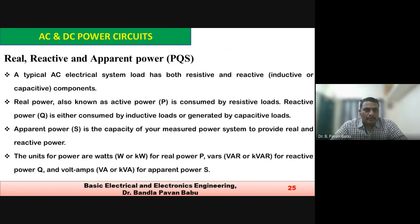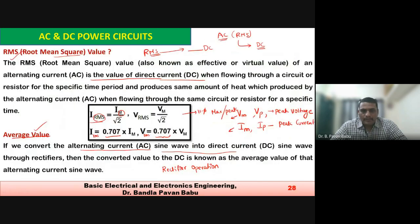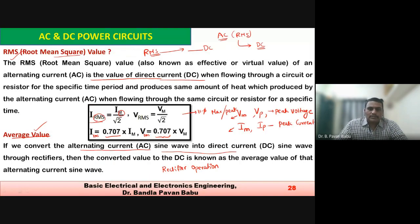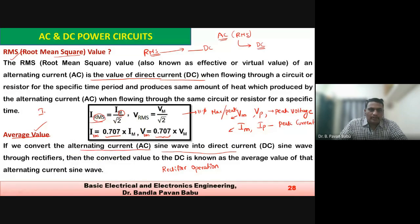The peak or maximum current equals √2 × I_RMS, and the peak voltage V_p equals √2 × V_RMS. These are the relations between maximum voltage, maximum current, and their RMS values.